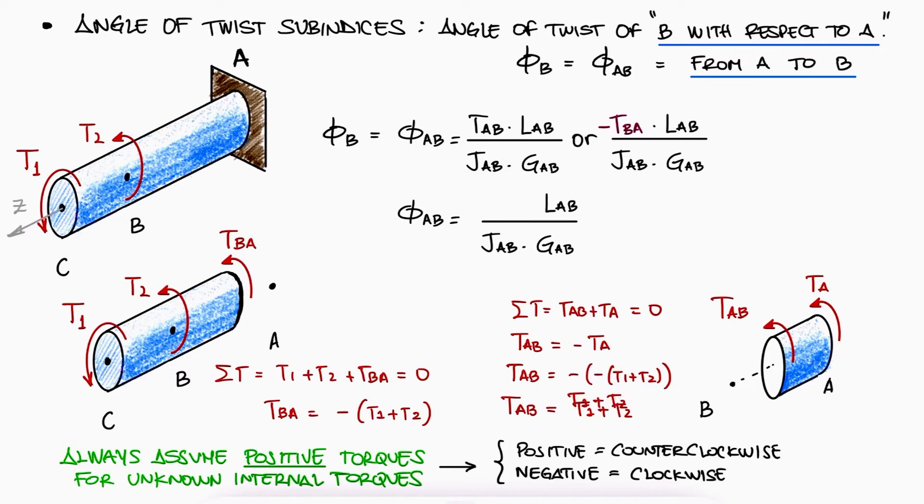Since TAB is a positive torque, phi AB is a positive angle of twist. This means that B is rotating counterclockwise.